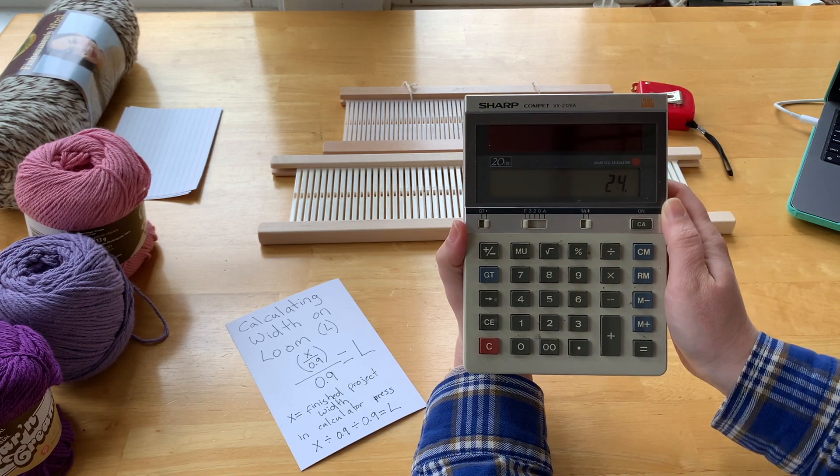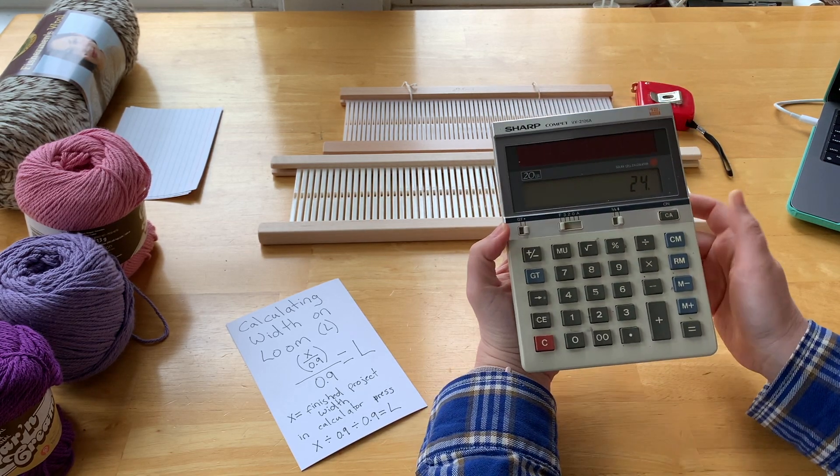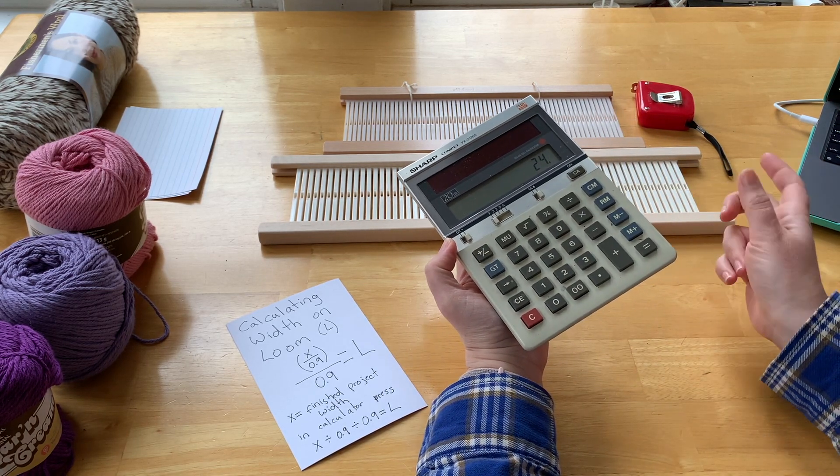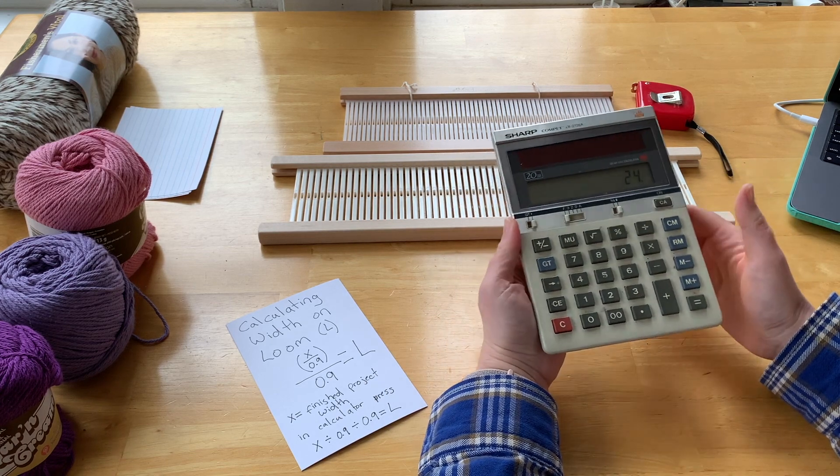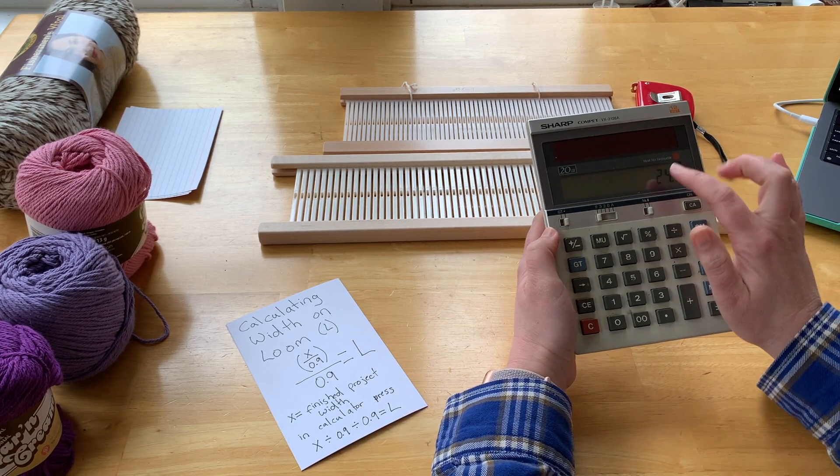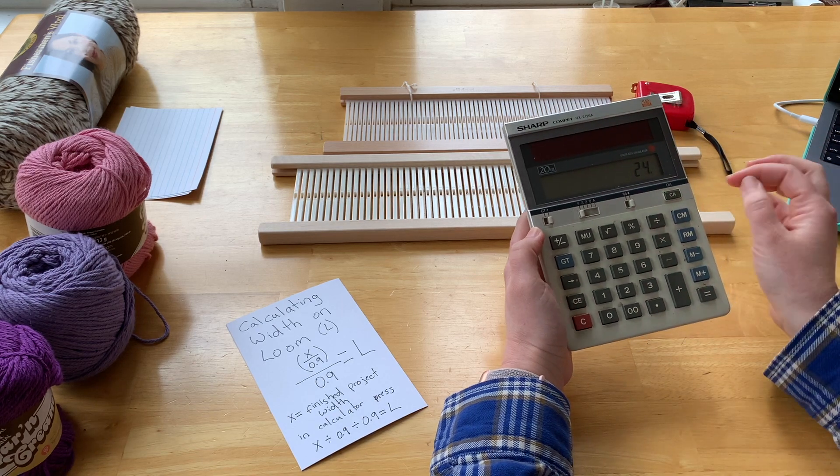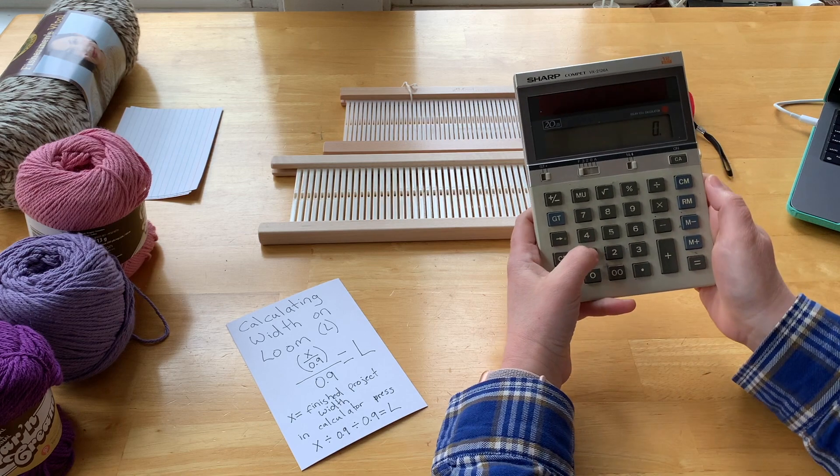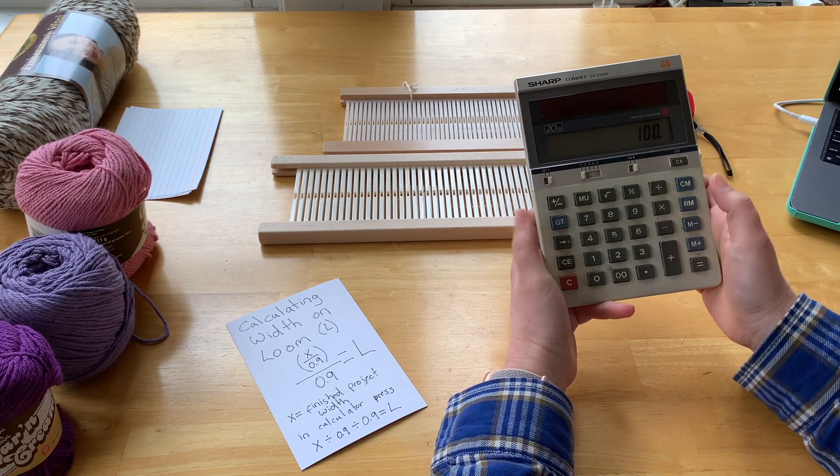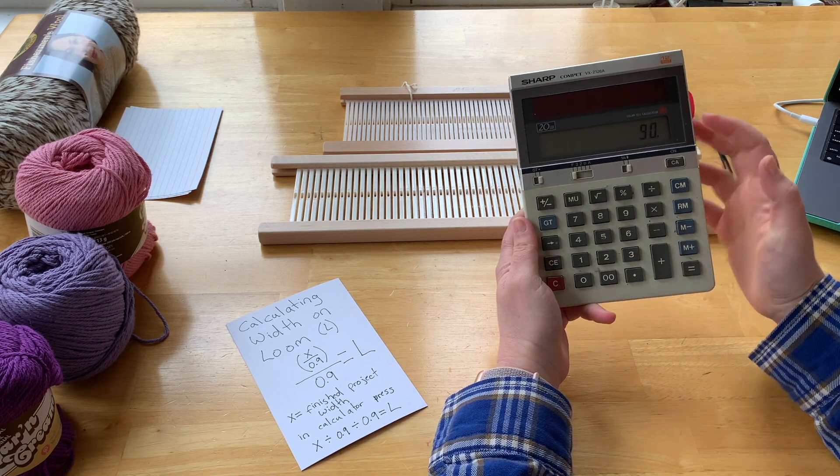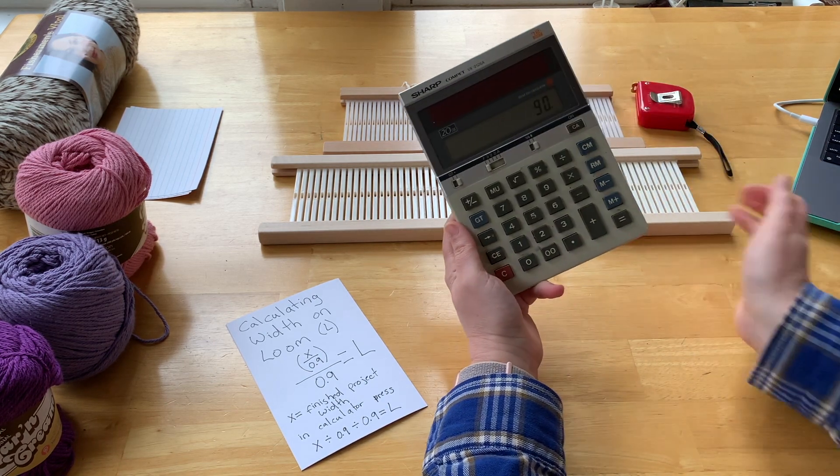24 inches, all right. So I need to account for 10% shrinkage, so what I'm going to do is I'm going to divide that 24 by 0.9. Where do I get 0.9? 0.9 is 100% minus that 10% we had before.